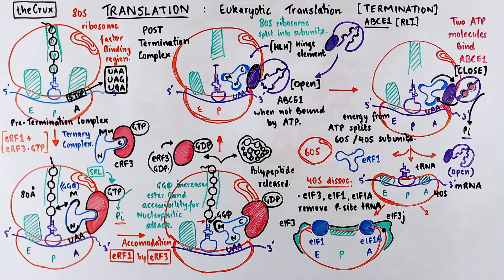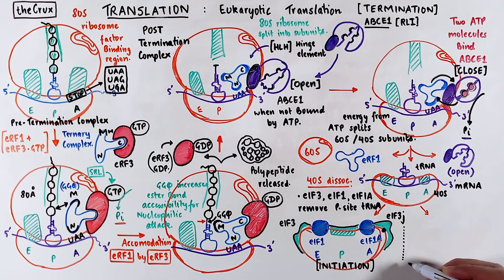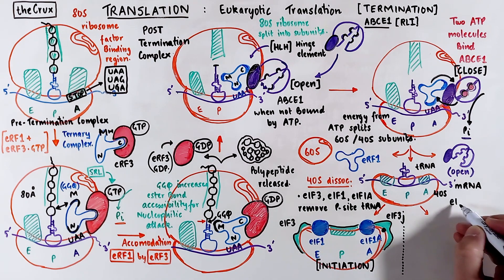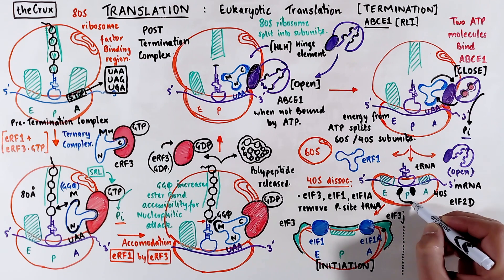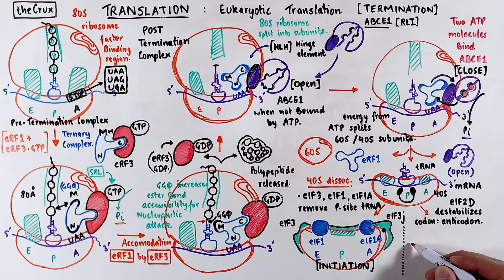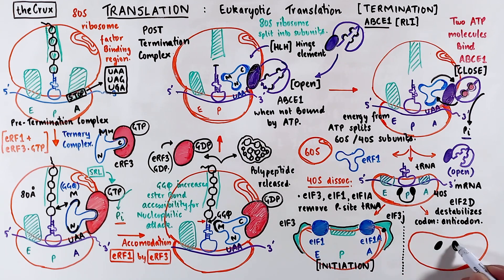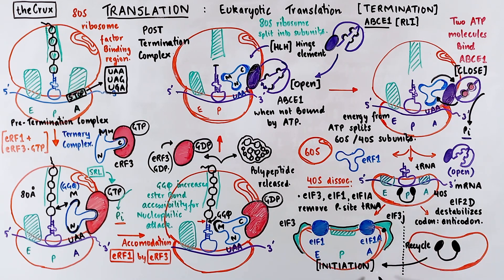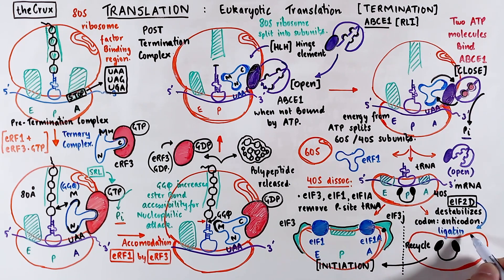This exact complex where the 40S subunit is attached with these initiation factors is a complex we also saw in the initiation step of translation, so the translation process is now coming to a full circle of understanding. The other mechanism relies on a different initiation factor, initiation factor 2D, which binds at the P site of the 40S subunit. This destabilizes the codon-anticodon pairing of the mRNA and tRNA at the P site, causing the mRNA and tRNA to release. The 40S subunit is then recycled, turned over, or can go into another round of translation. Note that initiation factor 2D is sometimes also known as ligatin, so don't be confused if you see that term used instead of IF2D — they refer to the same factor.